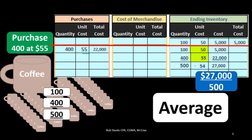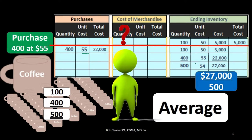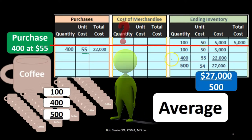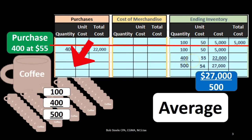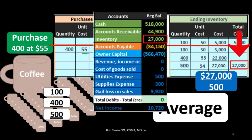The average is closer to the $55 than the $50 — you might wonder why the average is on the high side. The reason is because we only had 100 units at $50 but 400 units at $55. Therefore, we took the weighted average, which means the $54 is closer to the high side because we have more mugs that cost more money.